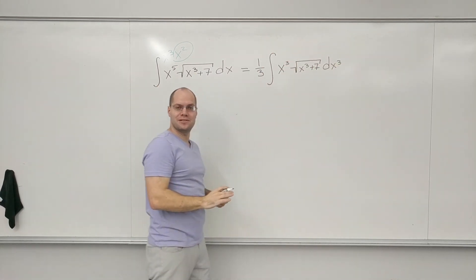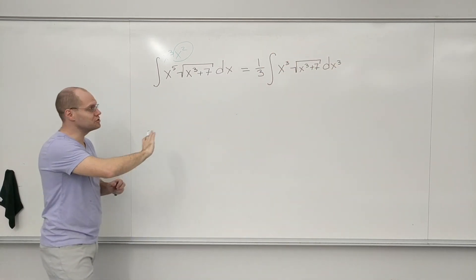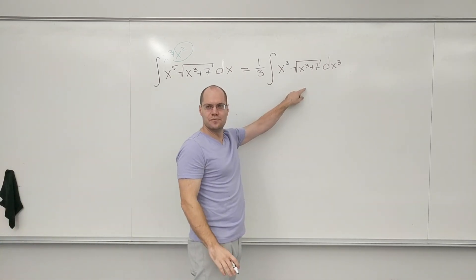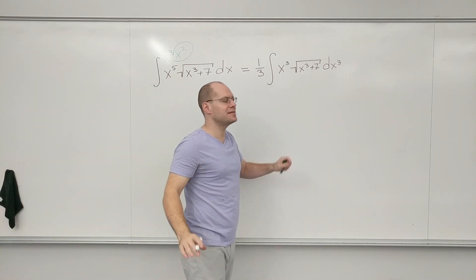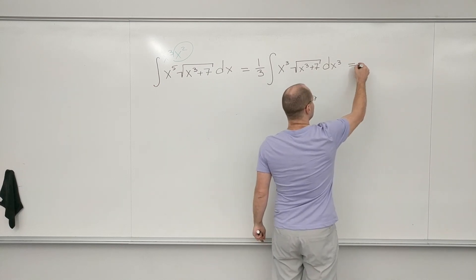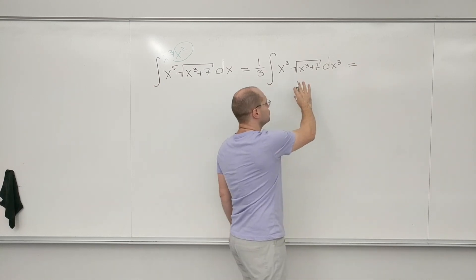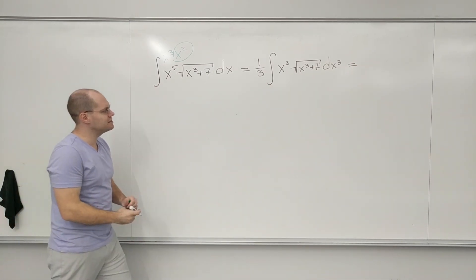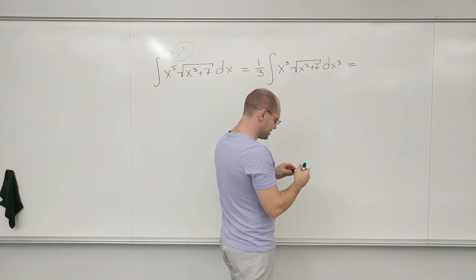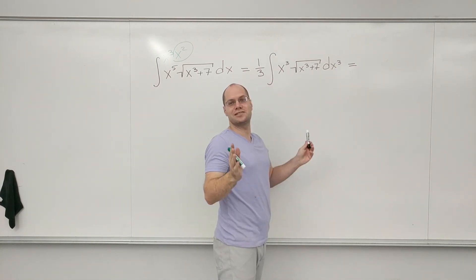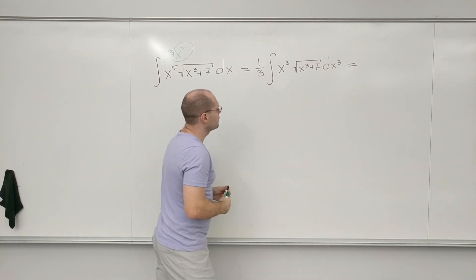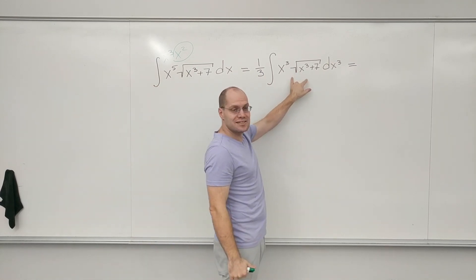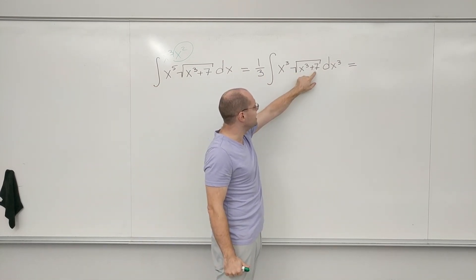Because I promised I would do this like I actually would, I will not switch to u — I consider that an extra step that's not needed. x^3 is simple enough that I can deal with it; I just think of it as a single symbol. Now I look at this and I realize I still have a problem: if I didn't have a 7, I'd be golden because it's just some power.